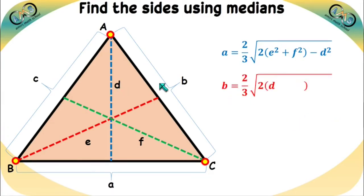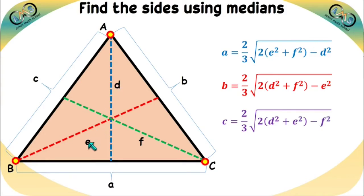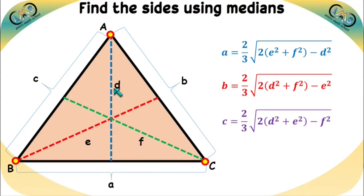Similarly, for side b, the formula is b = 2/3 × √(2D² + 2F² − E²). And for side c, the formula is c = 2/3 × √(2D² + 2E² − F²). These three are the formulas to find the side lengths a, b, and c when the median lengths D, E, and F are given.